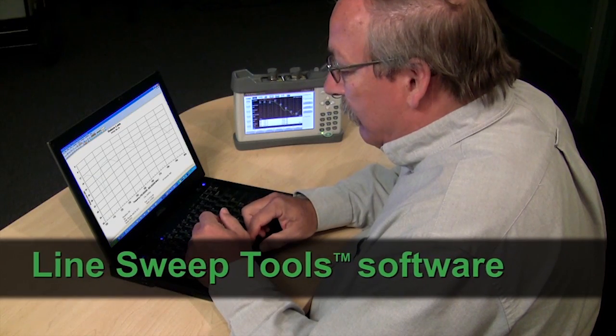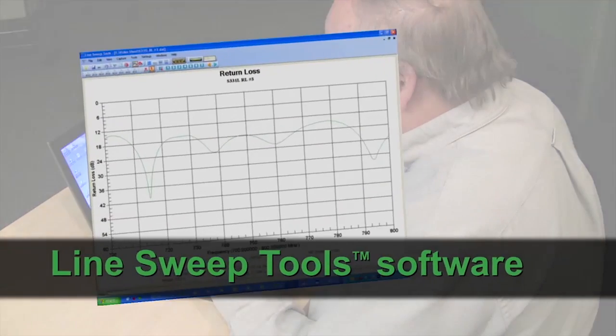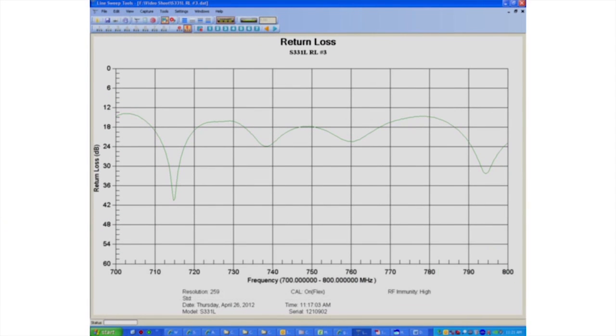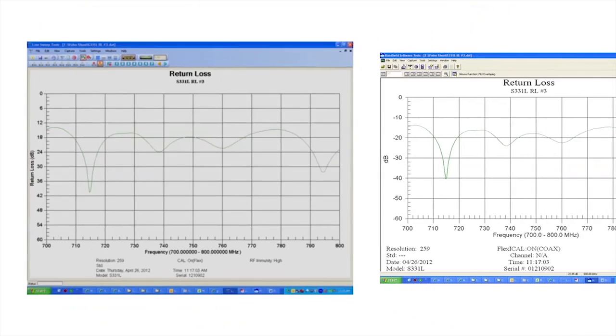Every S331L comes with Enritsu's Line Sweep Tools software, our powerful post-processing and archiving software featuring an easy file renaming capability and report generation.